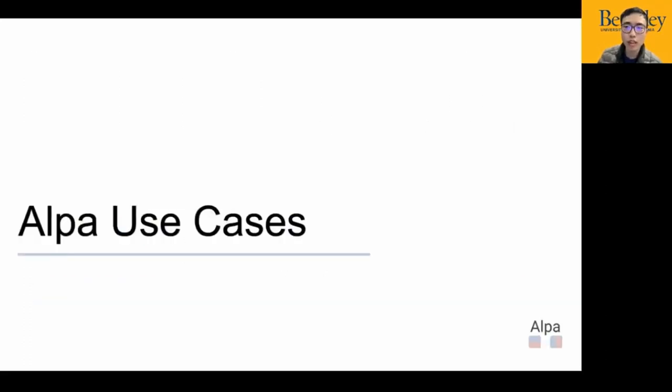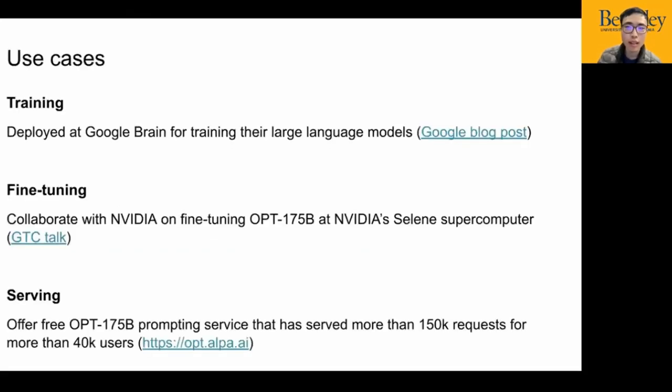The above is a brief introduction about the technologies behind ALPA. More details can be found in our paper. Now let's move on to talk about some real-world use cases of ALPA. Since its release, ALPA has attracted a lot of attention from the open-source community and several companies. On the training side, ALPA is deployed at Google Brain for training their next-generation large language models. And on the fine-tuning side, we collaborate with NVIDIA on fine-tuning the OPT model with 175 billion parameters at its supercomputer. We will give a GTC talk soon. And on the serving side, we launched a free OPT-175 prompting service several months ago. It has successfully served more than 150,000 requests for more than 40,000 users.